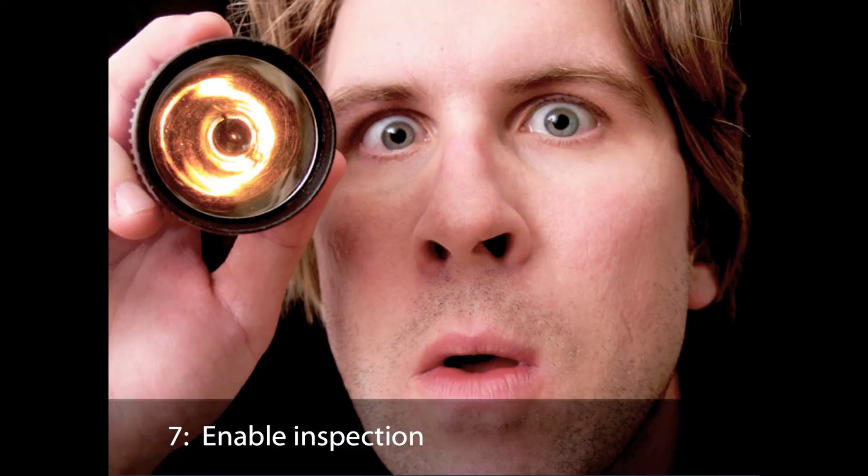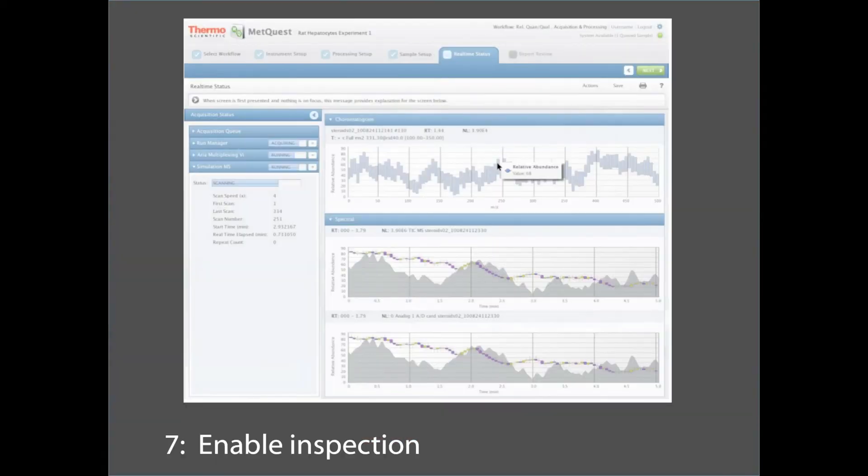The seventh thing I want to share with you is the ideal of enabling inspection using visualization. Now, here's a piece of software that runs a mass spectrometer. The mass spectrometer is about a $750,000 piece of equipment. This particular software and instrumentation was used to test all of the Olympic athletes in the 2012 Olympics. Now, in the upper band there,